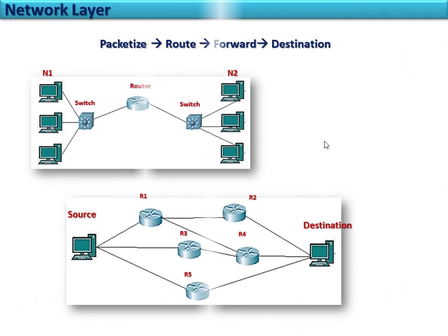This diagram shows a router connected in a network. The primary duty of the network layer in TCP/IP protocol is packetizing data — all data collected from the higher layers is packetized to transmit to the destination. Once packetizing is done, the next duty is to find the route with the help of the router. After the path is determined, the action is forwarding the packet to the destination.